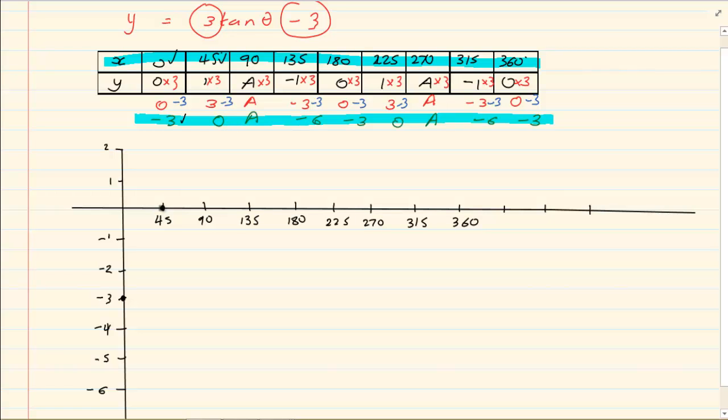Then we have 45 and 0. Then on 90 we have an asymptote. 135 and minus 6. Then we have 180 and minus 3.